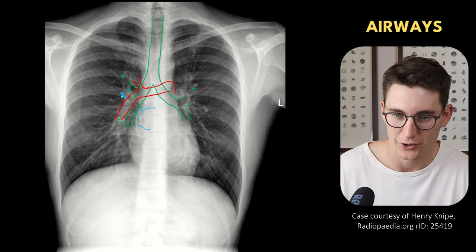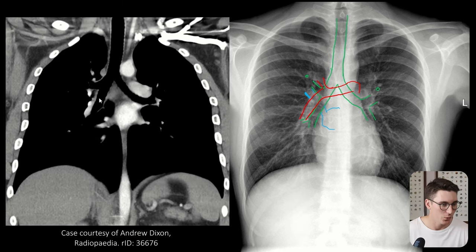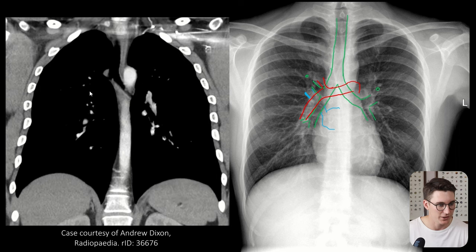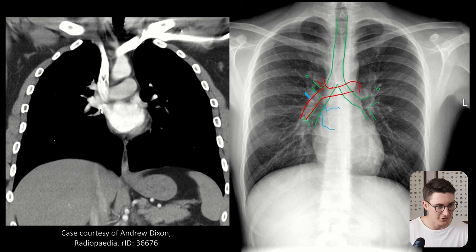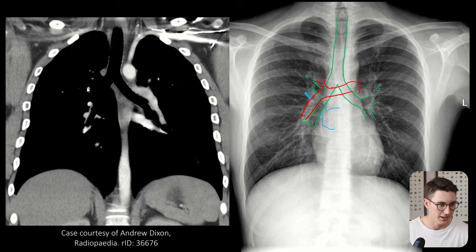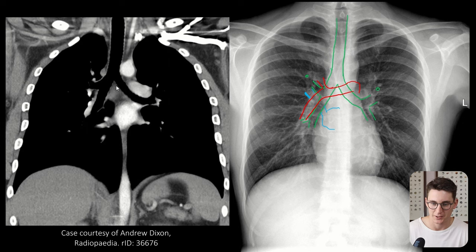This angle here is our hilar angle on the right. Let's have a look at those structures. We can see our right interlobar artery lateral to that right upper lobe bronchus. Follow this structure down — there it is, running behind our right interlobar artery, following down into the confluence and into our left atrium posteriorly. Follow that artery coming around the back — that's making up this angle on our right hilum.